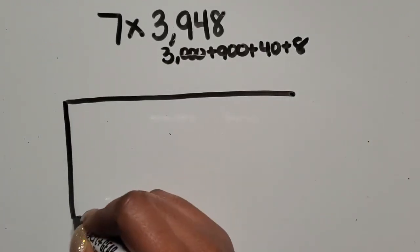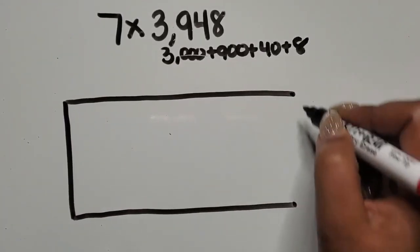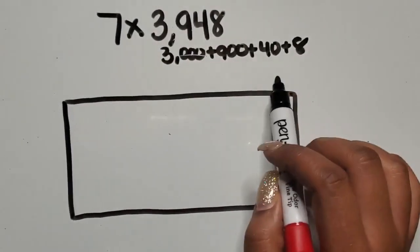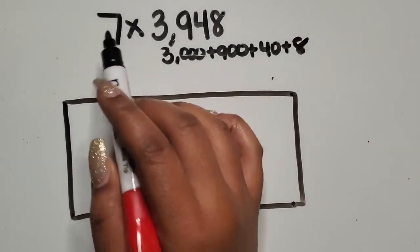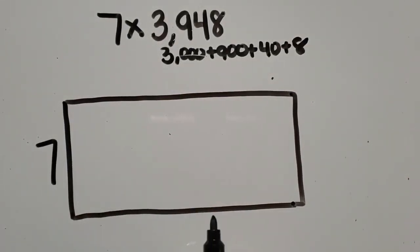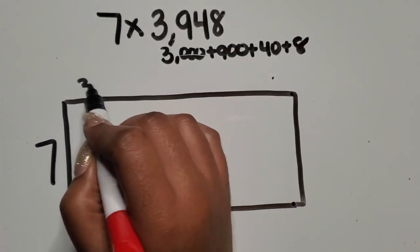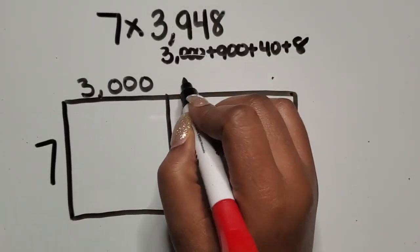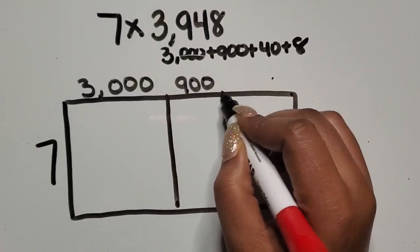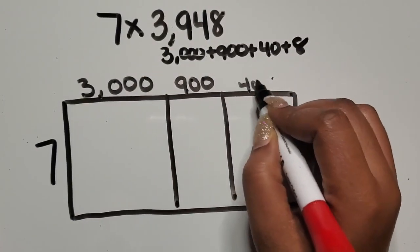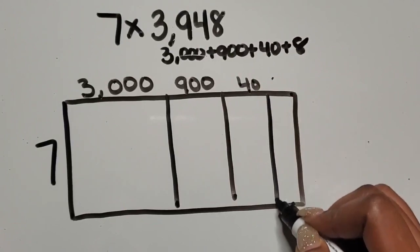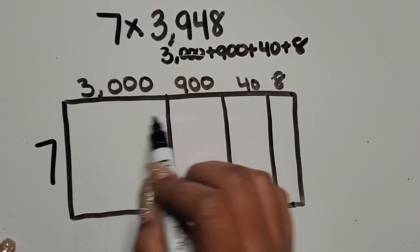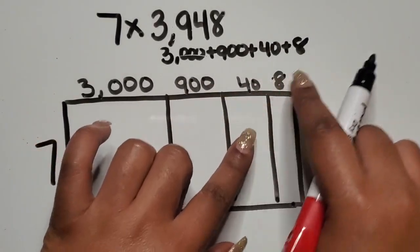I'm going to draw my rectangle. I'll make the top and bottom lengths longer because this second factor represents the number that goes in each row. This first factor is going to represent the number of rows. So I'm going to write my three thousand here, my nine hundred here, my forty here, and then my eight here.